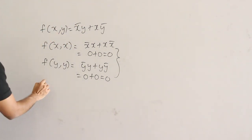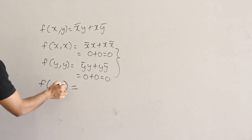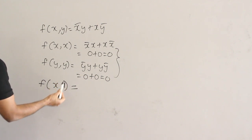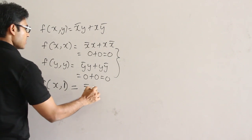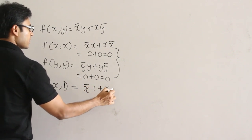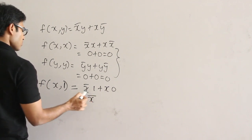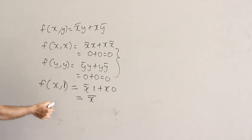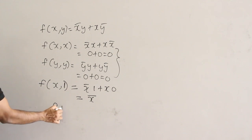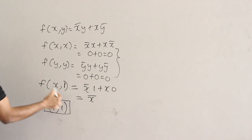So if I write f(x, 1), in place of y I am going to put 1: x' · 1 plus x · 0, which is nothing but x complement. So directly I am not able to get the complement, but provided with a constant 1, I am able to get the complement. So f(x, 1) is giving me the complement.